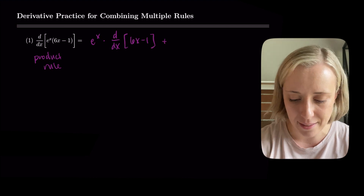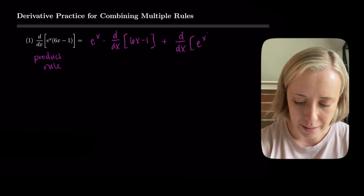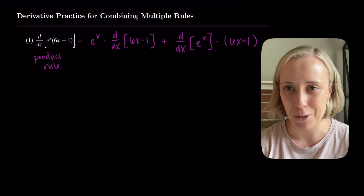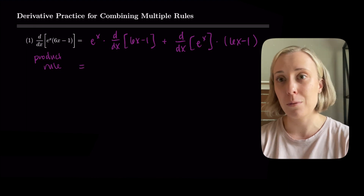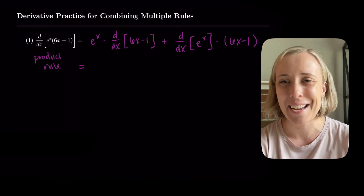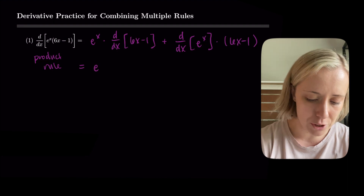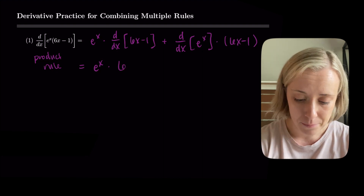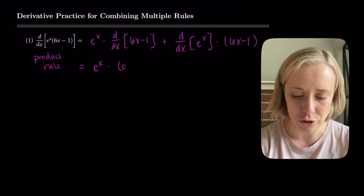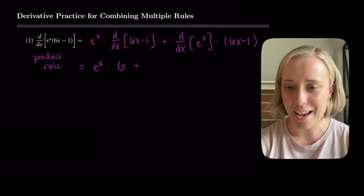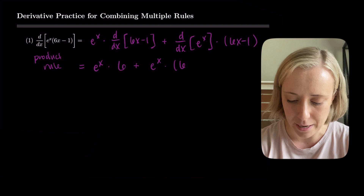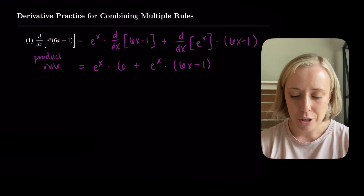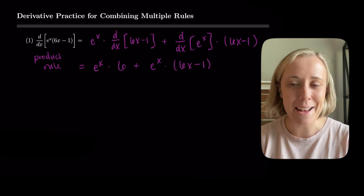Then I do the opposite: I add the derivative of e^x times (6x − 1) left alone. I recommend putting in as many parentheses as you need so you don't drop any algebra. Now I solve the inner derivatives: the derivative of 6x − 1 is just 6, and the derivative of e^x is e^x. So I have e^x · 6 + e^x · (6x − 1). I don't like to over-simplify derivatives since it often causes errors.